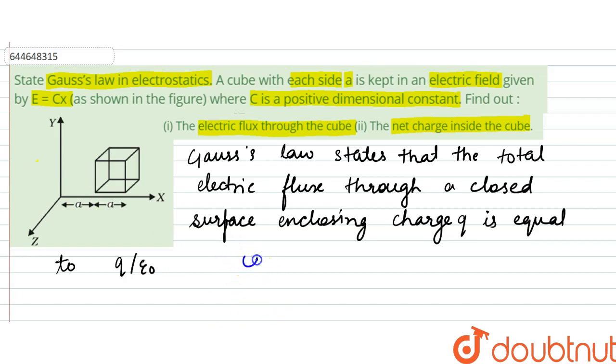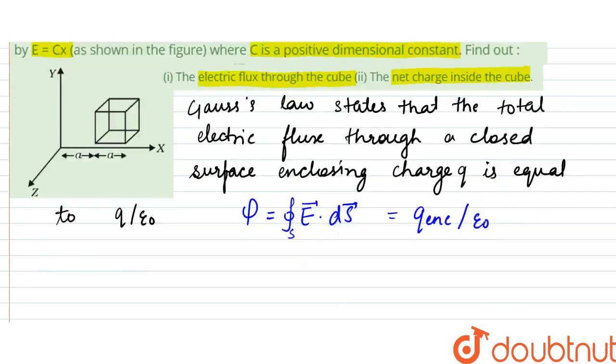Mathematically, it is represented by phi equals the integration of E dot dS along this closed path, which equals Q enclosed by epsilon naught.